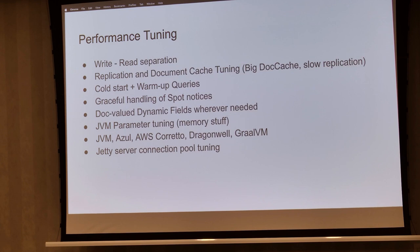We did JVM parameter tuning — basically memory configuration — and tried different JVMs: Azure, AWS Corretto, Dragonwell, and GraalVM. We needed to strike a balance between good boot-up time and cost efficiency, so we went with GraalVM for our use case. We also did HTTP server connection pool tuning.